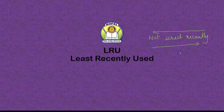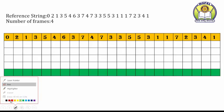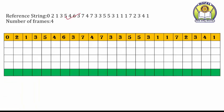So let us see the example — you will get a clear idea. A very long reference string is given over here. Now how many page frames are there? Four. Initially all the frames are blank. Jab bhi aapka process execution start kar raha hai toh frames are blank hongi.